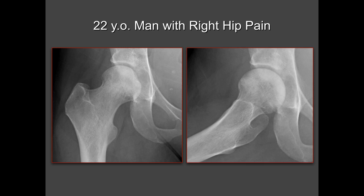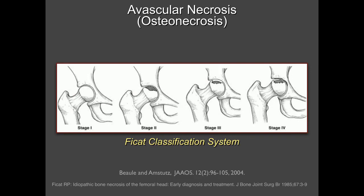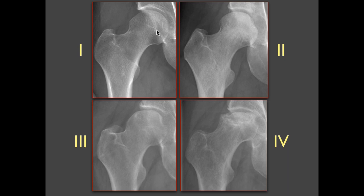Here's a 22-year-old man with gradual onset of right hip pain. You may notice increased density and sclerosis in the femoral head, visible on the frog leg lateral view as well. The joint space looks normal, and the contours of the femoral head look pretty normal. This is actually avascular necrosis in a patient with sickle cell anemia. This is staged according to the FICAT classification, stages 1 through 4. Stage 1 is basically completely normal radiographs; stage 2 is sclerosis with maintained contour; stage 3 is where you start to get flattening of the femoral head; and stage 4 is further flattening typically with joint space loss.